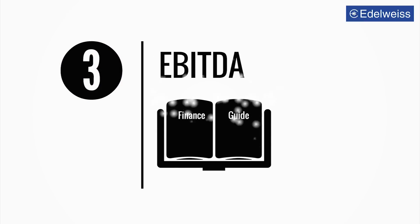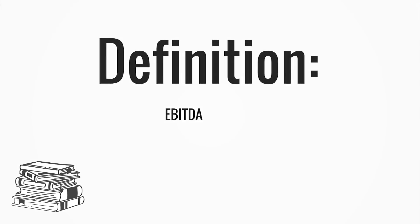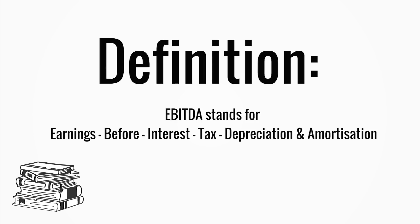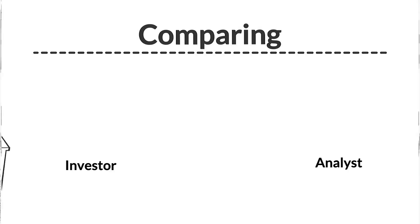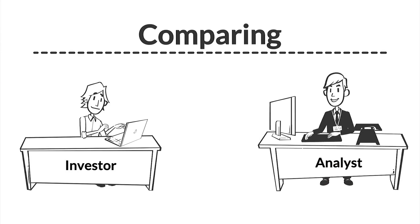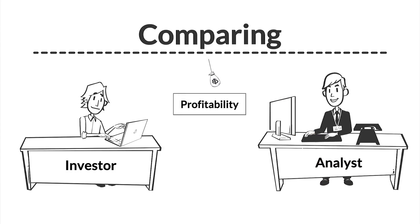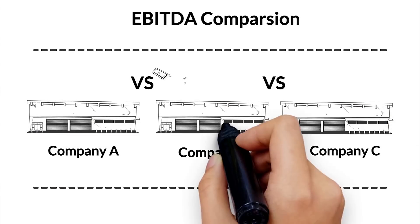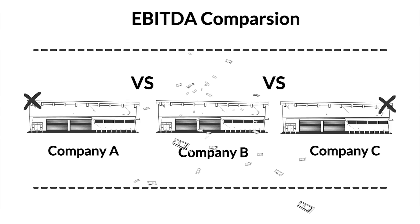What does EBITDA of a company indicate? EBITDA stands for Earnings Before Interest, Tax, Depreciation and Amortization. Investors and analysts generally use it as a benchmark of profitability while comparing two or more companies. This helps to determine which company is profitable and which isn't in case they have a similar product.